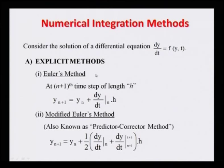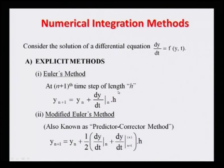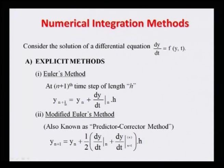Suppose you want to solve a differential equation dy/dt = f(y, t), a differential function with respect to y and t. This can be solved by the Euler method. At any step — the (n+1)th time step of length h — y_{n+1} equals y_n plus dy/dt evaluated at y_n, multiplied by h. Starting from n=0 and progressing to larger n, we can trace the function with respect to time and plot the different values of y.